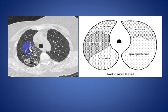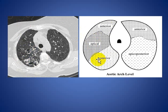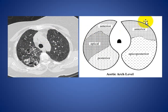At Level 2, at the aortic arch, we divide the right lung into three thirds. The upper third is the anterior segment, the middle third is the apical segment, and the lower third is the posterior segment of the right upper lobe. On the left, the lower third is the apical-posterior segment of the left upper lobe.